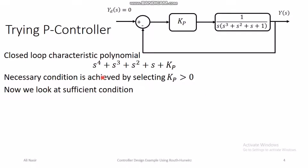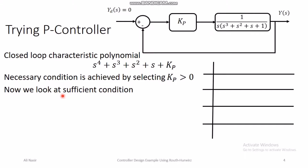We copy the characteristic polynomial here. The necessary condition of Routh-Hurwitz requires that all signs of the coefficients of the characteristic polynomial should be the same. Here the coefficients of all powers of s are positive, therefore to satisfy the necessary condition the controller gain Kp has to be positive. Now we look at the sufficient condition, for which we need to build the Routh-Hurwitz table. We line up all the powers of s and fill in the first row.